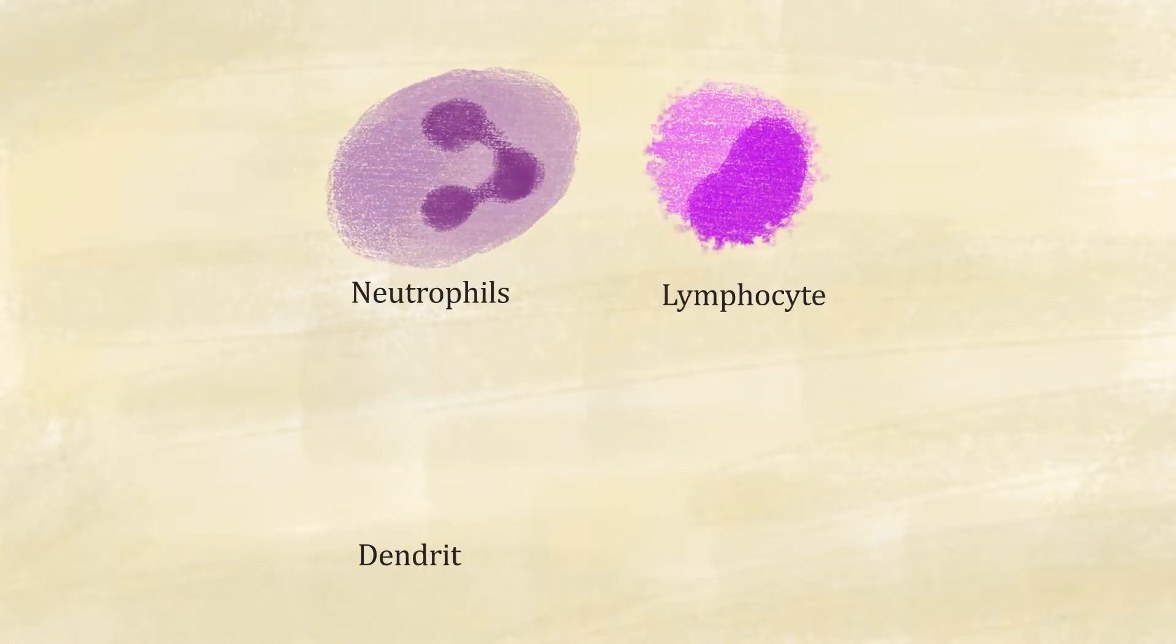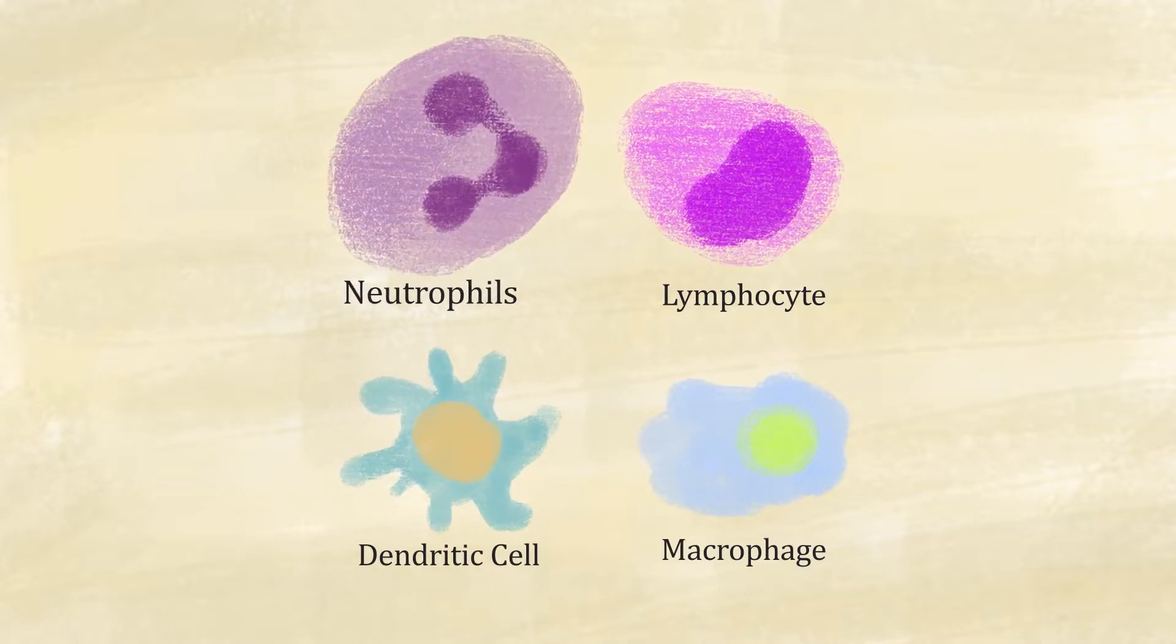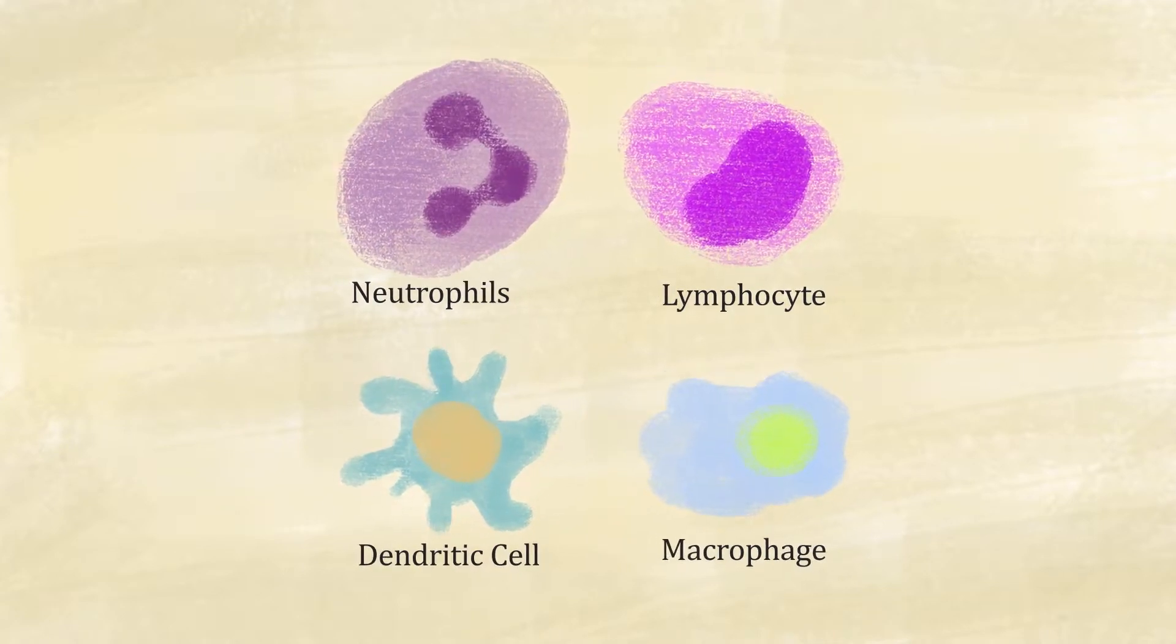The immune system is made up of several cell types, including neutrophils, lymphocytes, dendritic cells, and macrophages. Each one plays a different role in protecting your body.